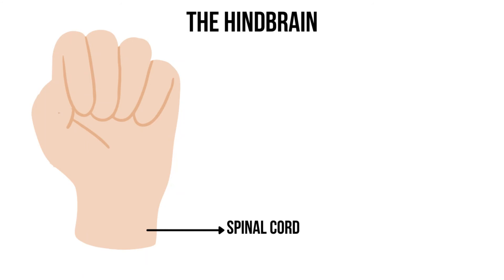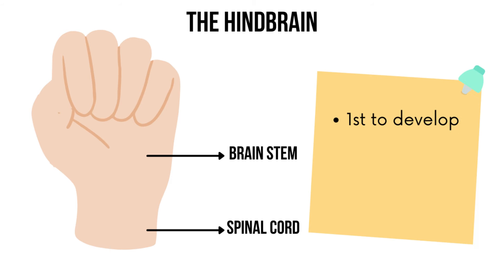The first part of the brain — the hindbrain — is represented by your forearm and your lower hand. Your forearm represents your spinal cord, and your lower hand represents your brain stem. This part of the brain is the first to develop, meaning it is the part of the brain that a baby has at birth.